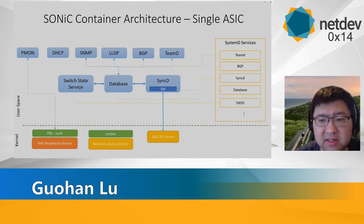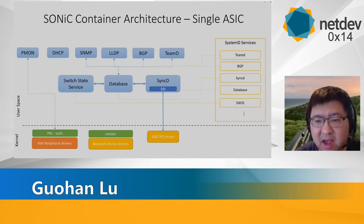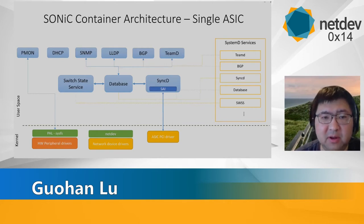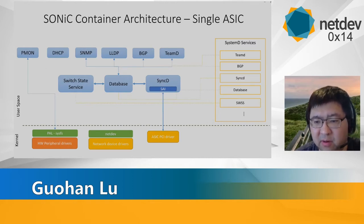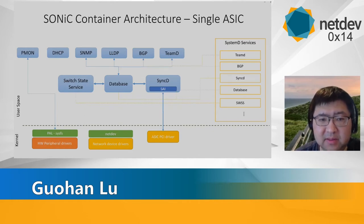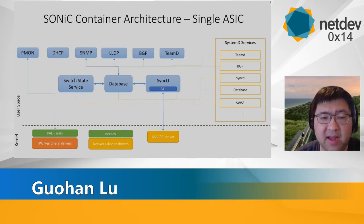On top of the SONiC stack, there is a networking application stack. Here we have BGP, LLDP, SNMP, and other networking modules that speak with their networking neighbors to exchange network protocols. In the middle layer, we have what we call the Switch State Service, which provides the interface allowing network applications to send commands and control the ASICs. The switch service has a backend database where all commands sent by applications are stored.